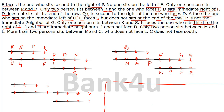J and M are immediate neighbours. J does not face D, so J cannot be placed in the position facing D — therefore J goes to the other spot and M faces D. Only two persons sit between M and L, so with M placed, L is positioned two gaps away.